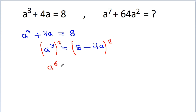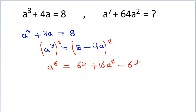a to the power 6 is equal to 64 plus 16a squared minus 2 into 8 into 4, which will be 64a. Now we have a to the power 7.